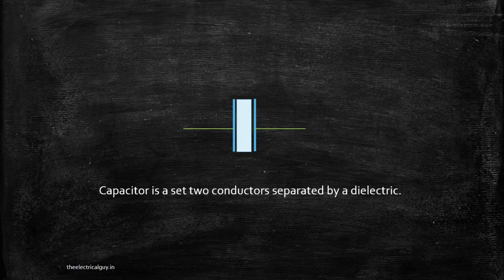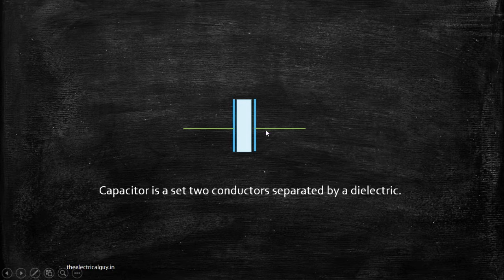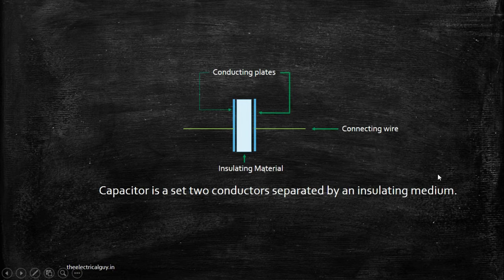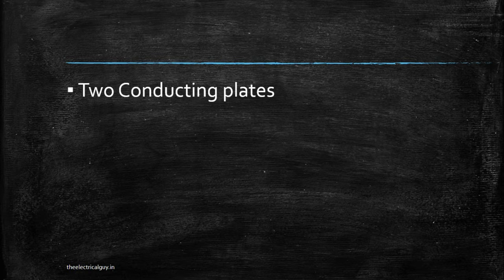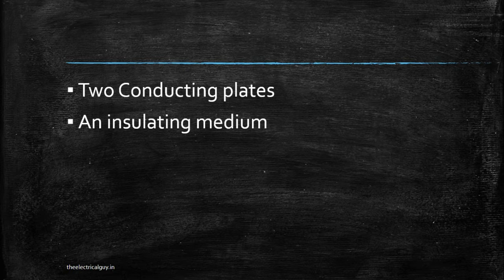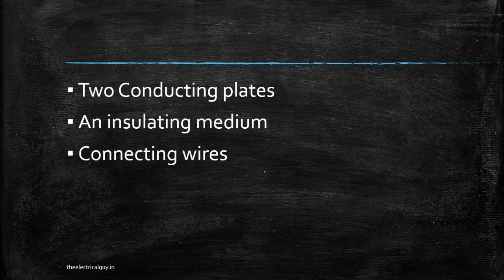We have a simple definition for a capacitor: a capacitor is a set of two conductors separated by a dielectric. Most students get confused by the word 'dielectric.' It is very simple — dielectric is nothing but the insulating medium. You can replace the word 'dielectric' with 'insulating medium'; they are one and the same. To summarize: to make a capacitor you need two conducting plates, an insulating medium, and connecting wires.